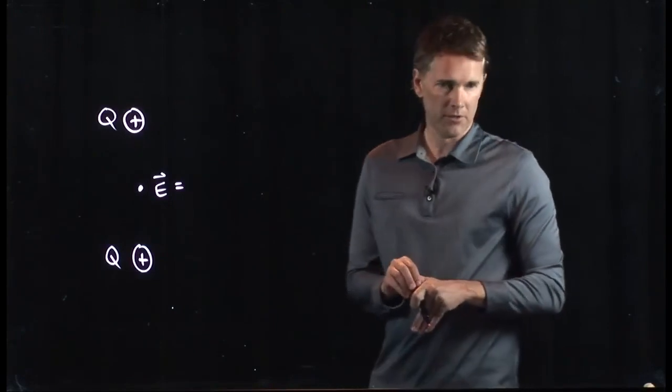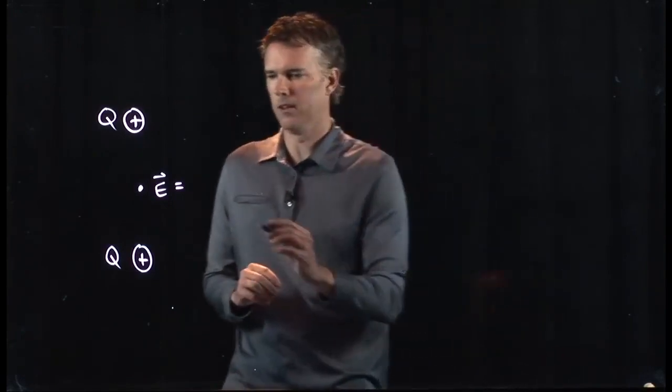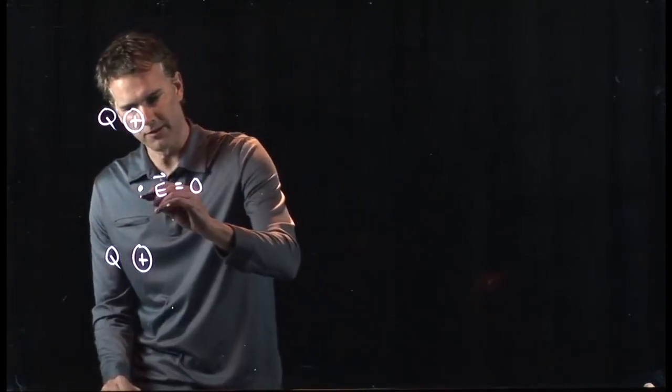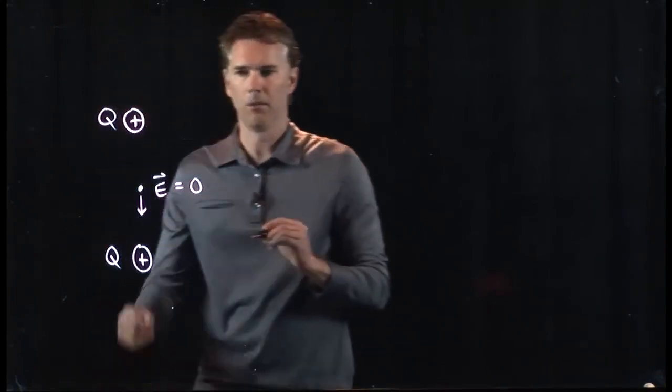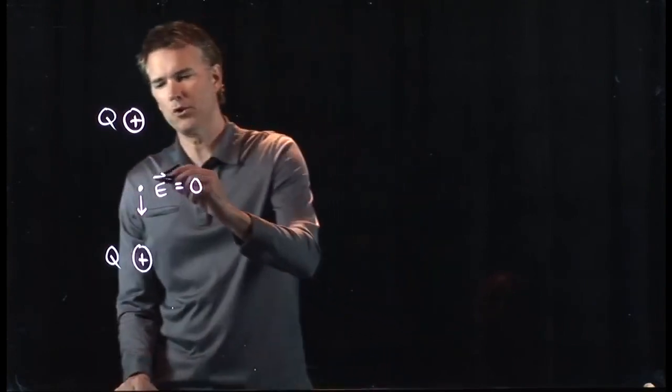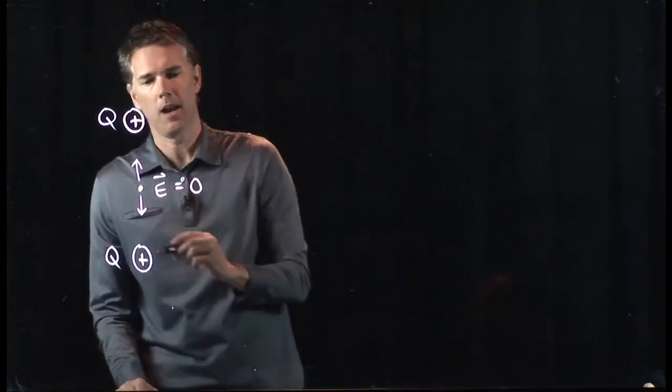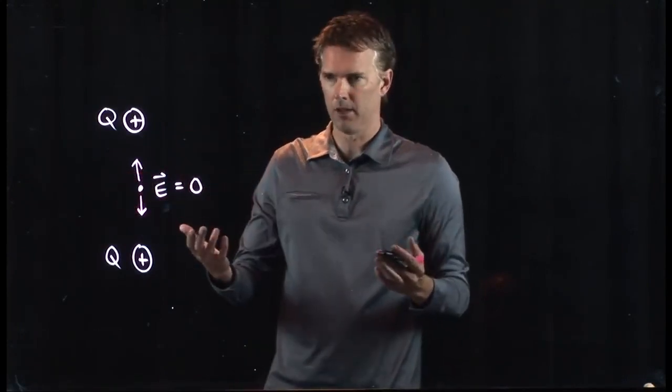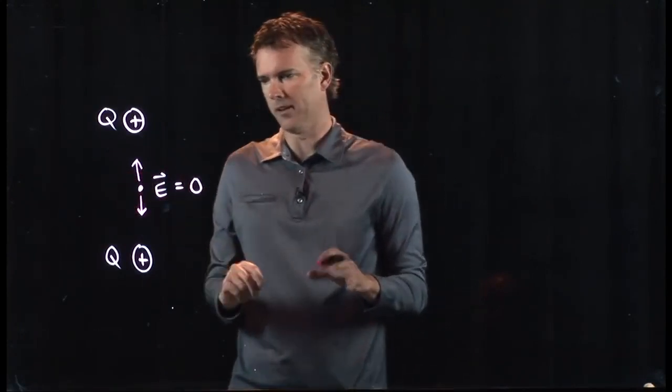Zero. Zero, right? We know that. It's zero. Why is it zero? Because the top charge is giving us an electric field that looks like that, pointing down. The bottom charge gives us an electric field like that, pointing up. If that point is halfway in between the two, they're equal and opposite. It cancels out. Everybody's happy.